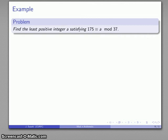Here's another example: find the least positive integer a satisfying 175 ≡ a mod 37.